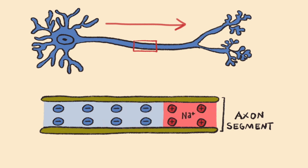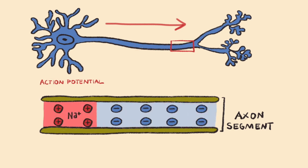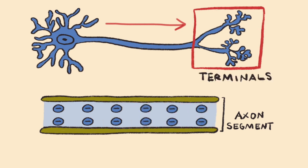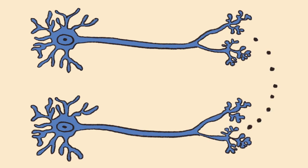The end result of action potential propagation is that the action potential will reach the axon terminals where neurotransmitter vesicles are located. The arrival of this action potential will trigger the subsequent release of neurotransmitters so that the electrical signal can be transmitted to the next neuron along the chain.